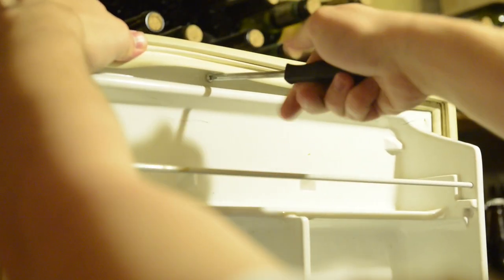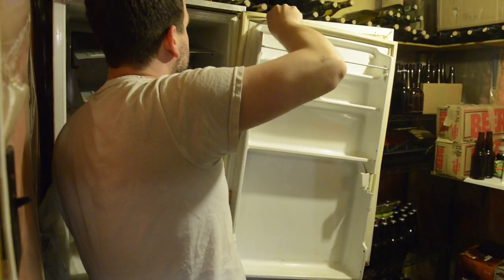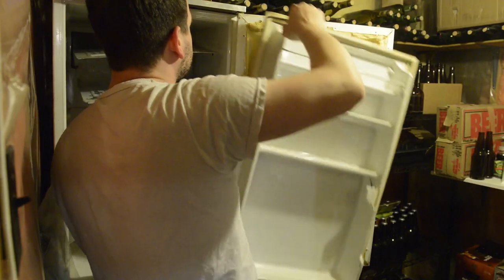To remove the door molding you just push that door seal up and then you can undo all of the screws and once you do that the door molding will come off.